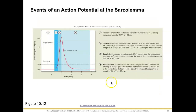Here are those events in graph form. Resting membrane potential at negative 90 millivolts. The EPP takes place, moving us from negative 90 to threshold at negative 65 millivolts. Then depolarization: sodium-gated channels open, lots of sodium enters, making us more positive. We've reached our action potential, and it propagates down the sarcolemma. At the depolarized location, sodium-gated channels close and potassium-gated channels open, potassium leaves the cell, and we become more negative through repolarization, moving from positive 30 millivolts back down to negative 90 millivolts.